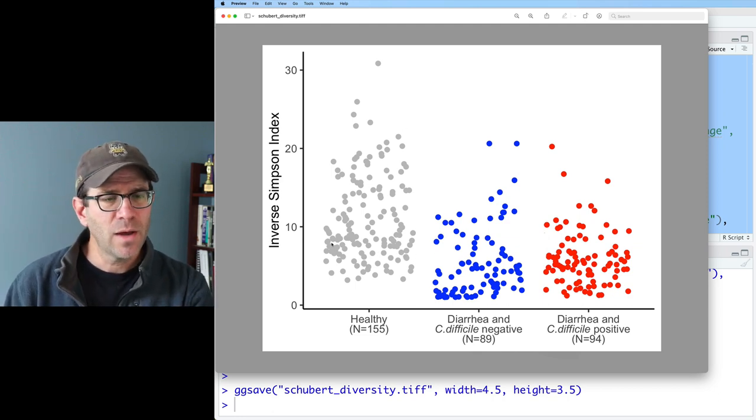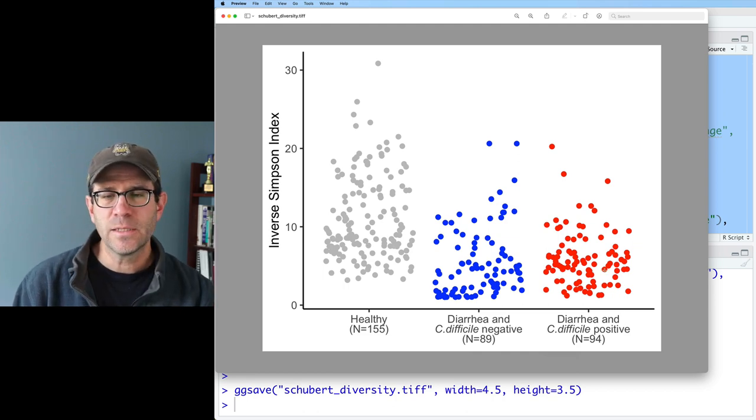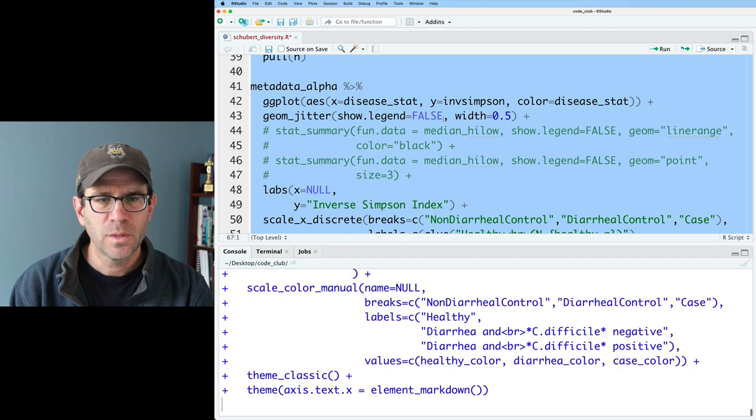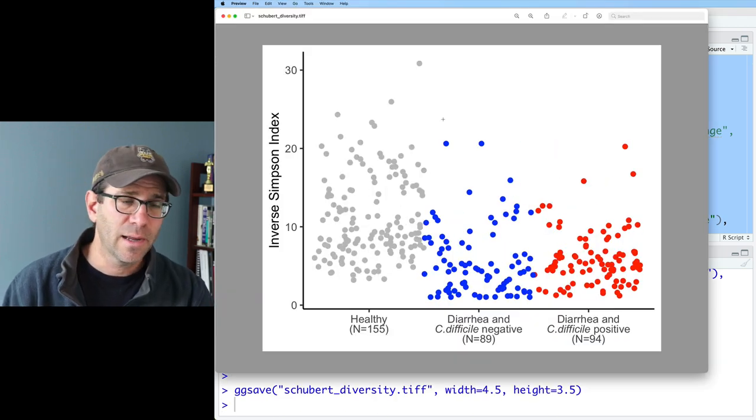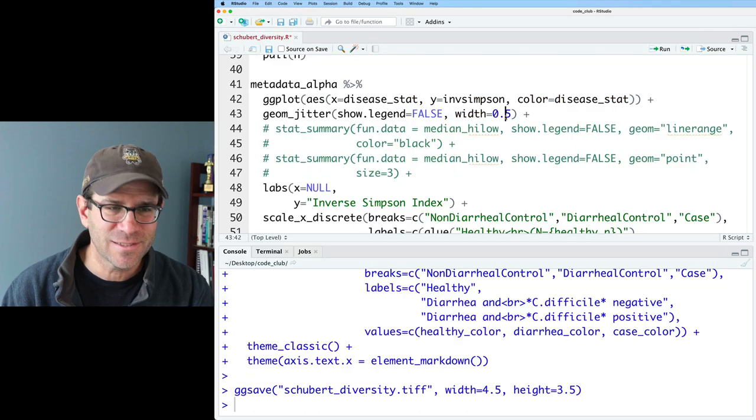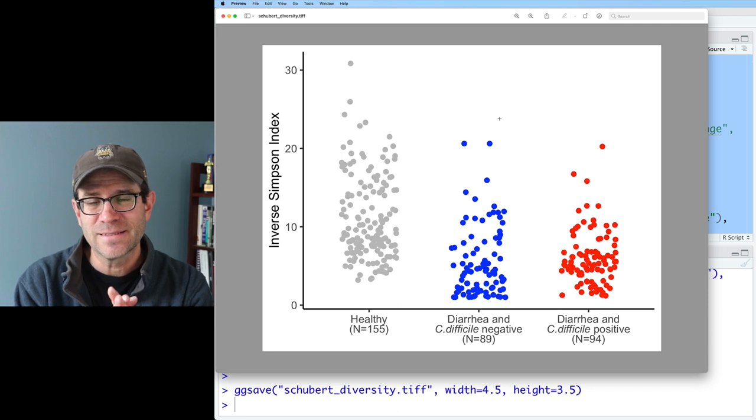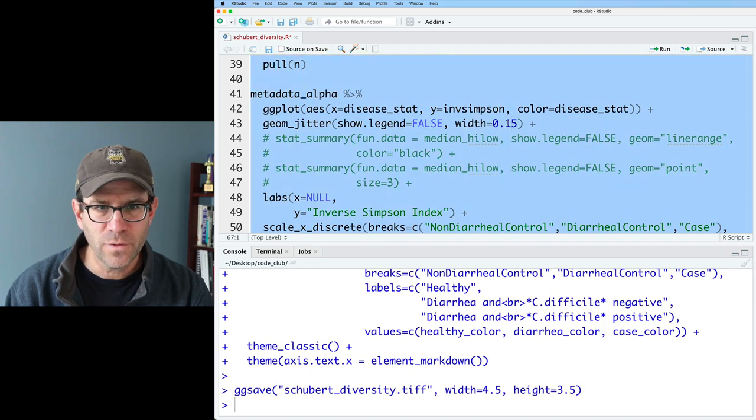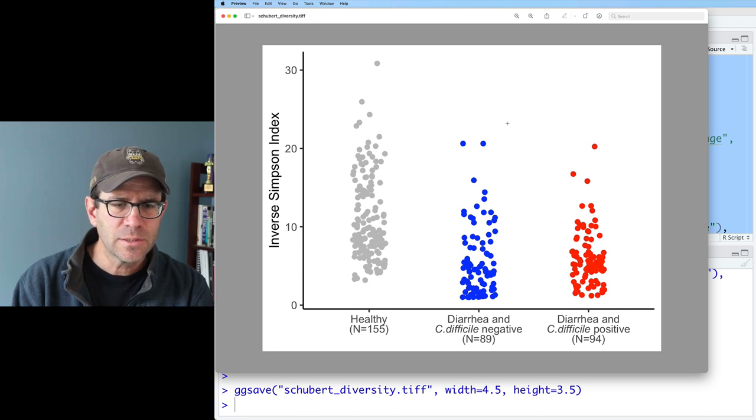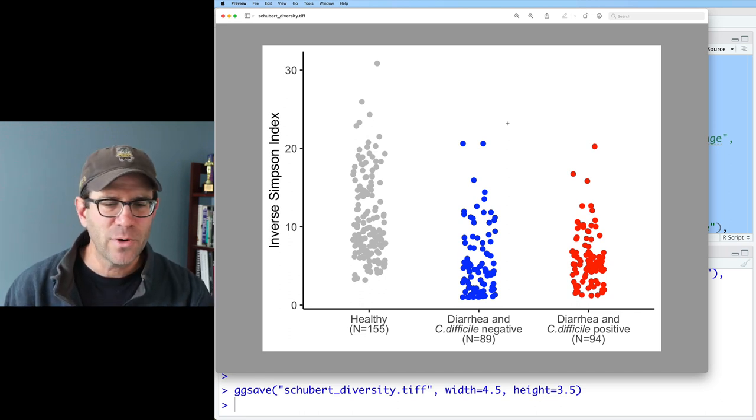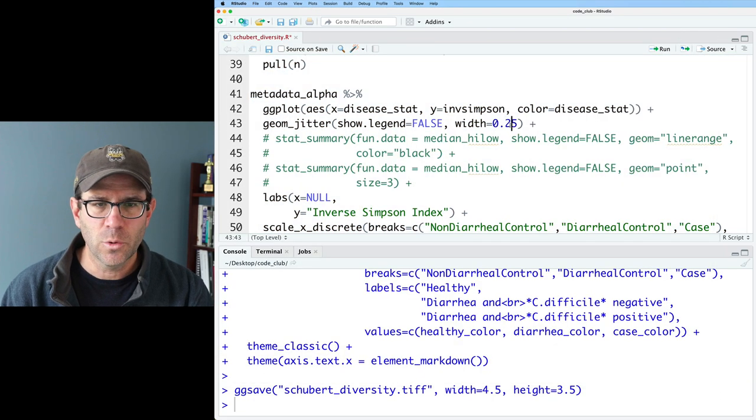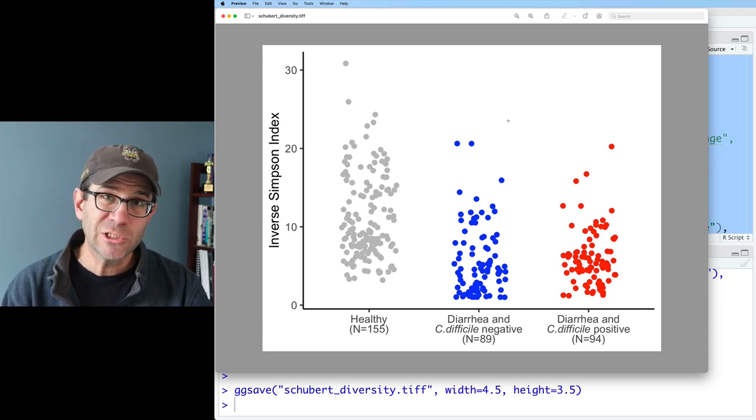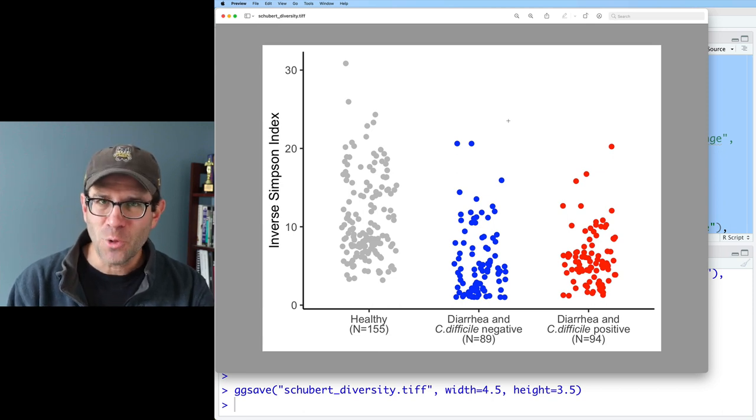Instead, I'm going to use a function called geom_jitter. The beauty of a jitter plot is that we see all of the data, and within each of the three categories we have a random dispersion on the x-axis. The position on the x-axis within this gray, blue, or red cloud doesn't mean anything. I'm going to turn off show.legend equals false. Something we could do with geom_jitter would be to do width equals 0.25, and that will make our cloud a little bit more narrow.